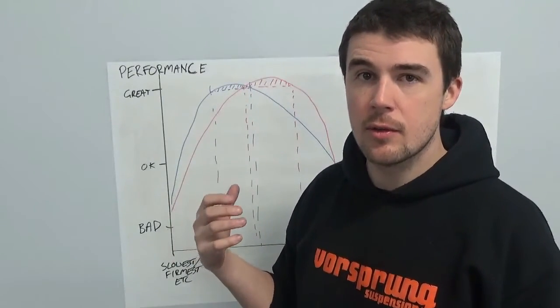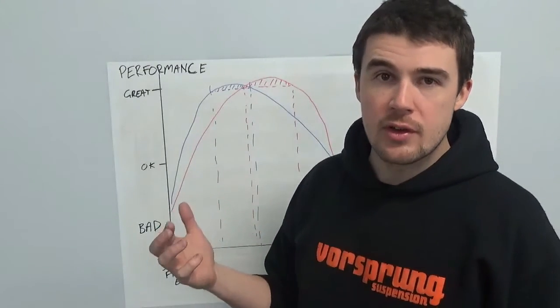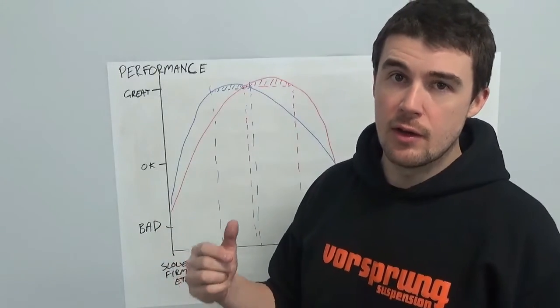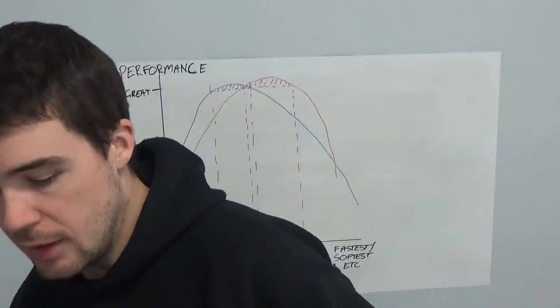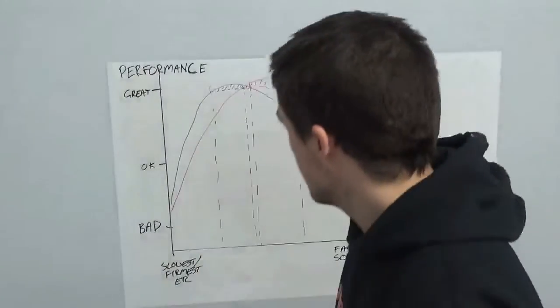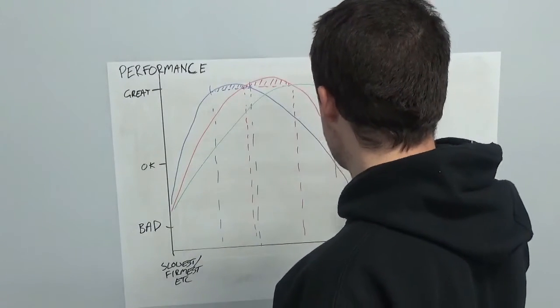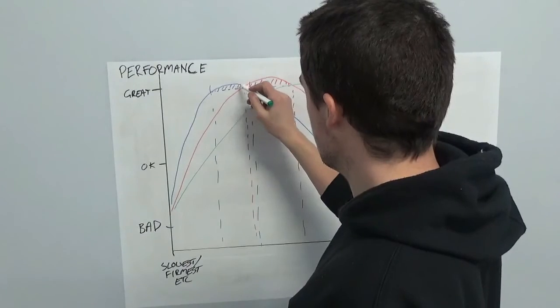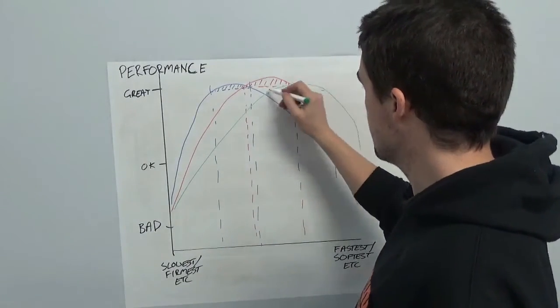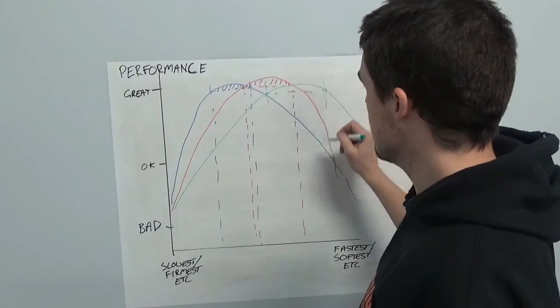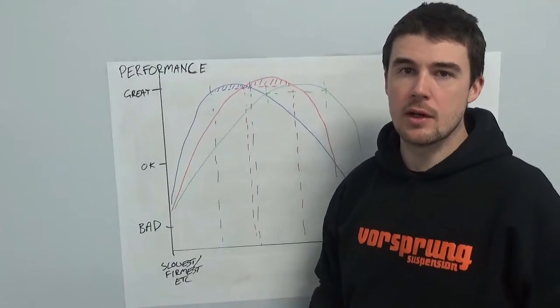What you ideally want to do then is make sure that you are essentially using this as a Venn diagram and finding the overlap. And that means finding the position in that range of adjustment where both of those characteristics are satisfied as well as they can be. Now, what you may also find is that there are times when in reality you have a curve that instead of this red one is way out there. And that means that the best that you are really going to get is where these two curves here intersect because the highest performance points might be completely separate from each other. And that is when we really start to see compromise appearing in terms of setup.